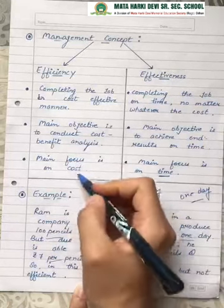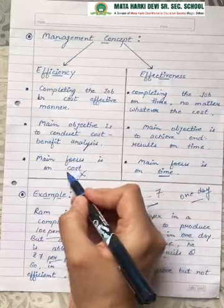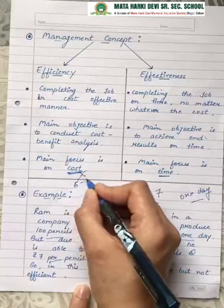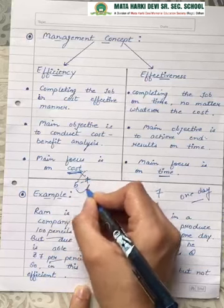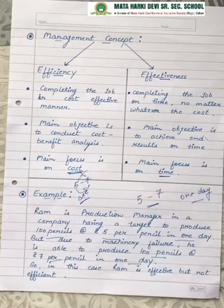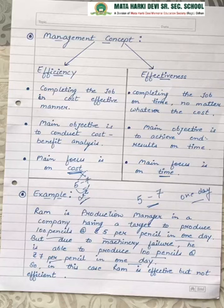But he is not efficient. Why? Because the cost increased from ₹5 to ₹7 per pencil — meaning the cost exceeded by ₹2. So Ram has effectiveness but not efficiency in this case.